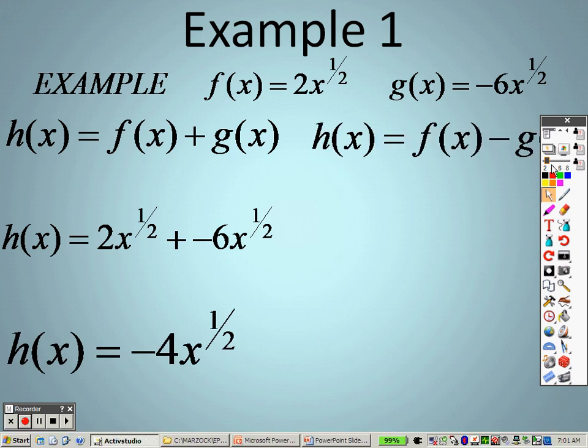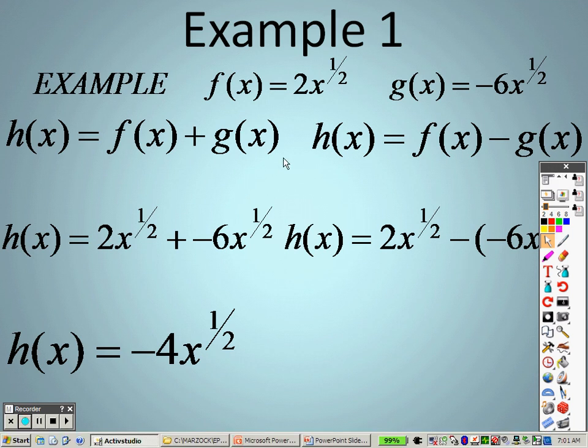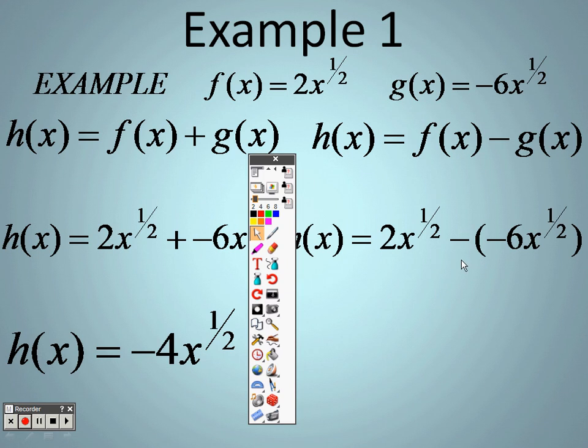This is now using subtraction. So f of x minus g of x. So when I am subtracting, I just plug this in for f of x and I plug this in for g of x. So it is 2x to the half minus, and that is 6x to the half. Minus a negative is like saying plus. So 2 of them plus 6 of them is 8x's to the half.